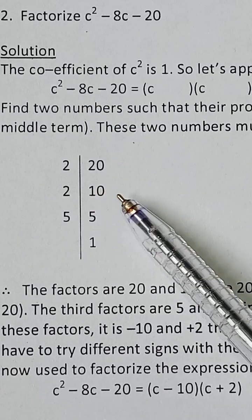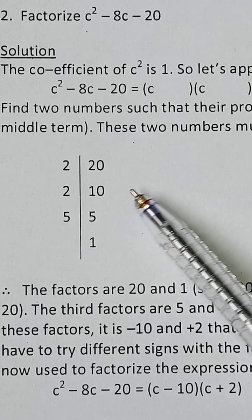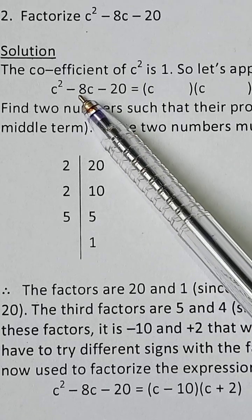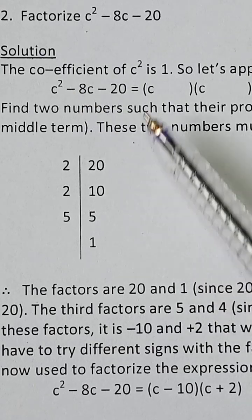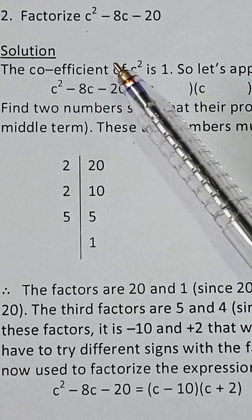We need -8, so we take -10 and +2. -10 added to +2 will give us -8. So the factors of 20 that multiply to give -20 and add to give -8 are -10 and +2.